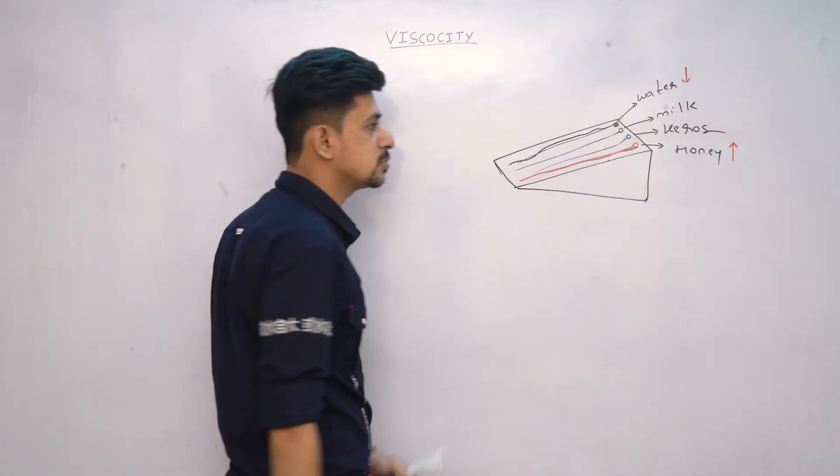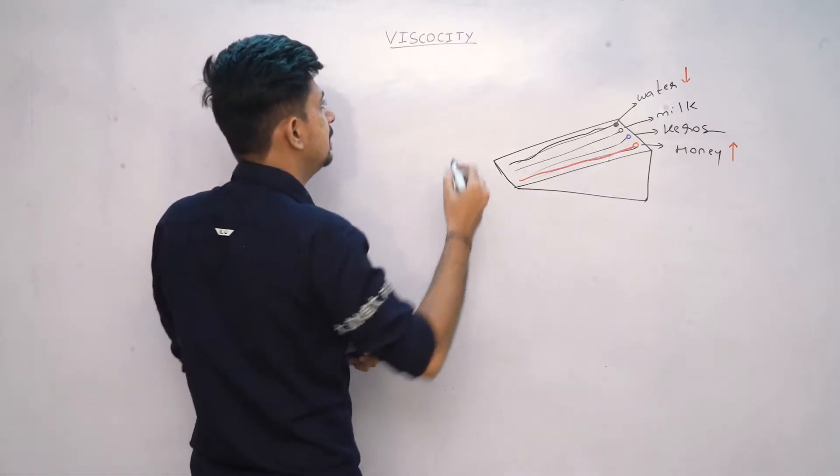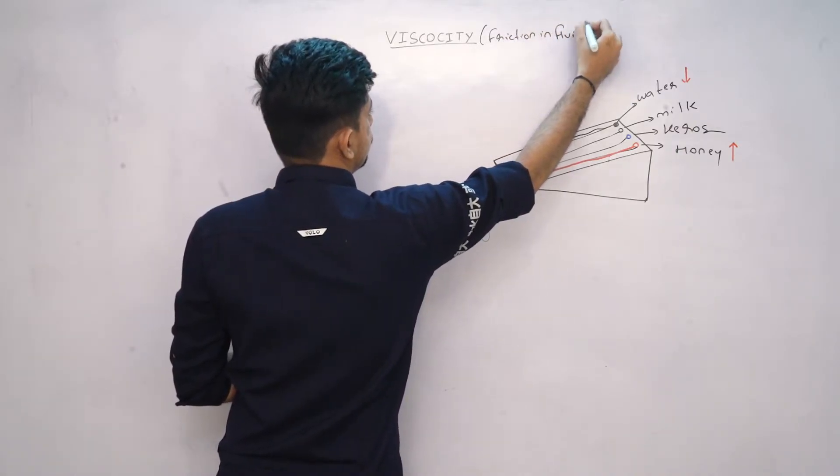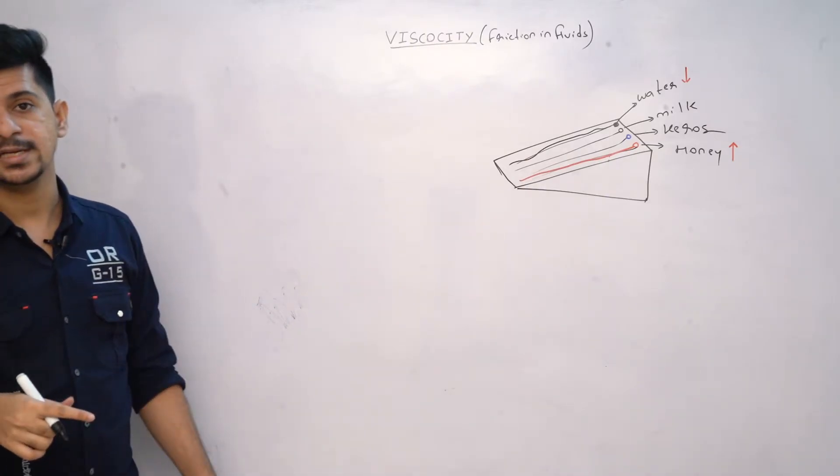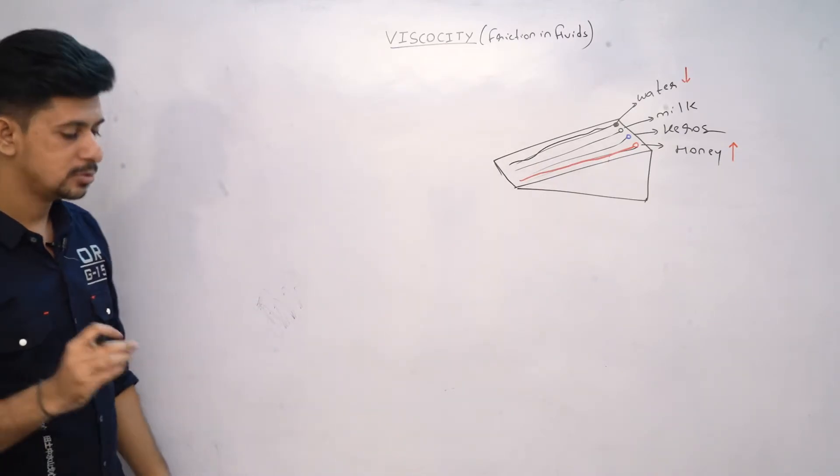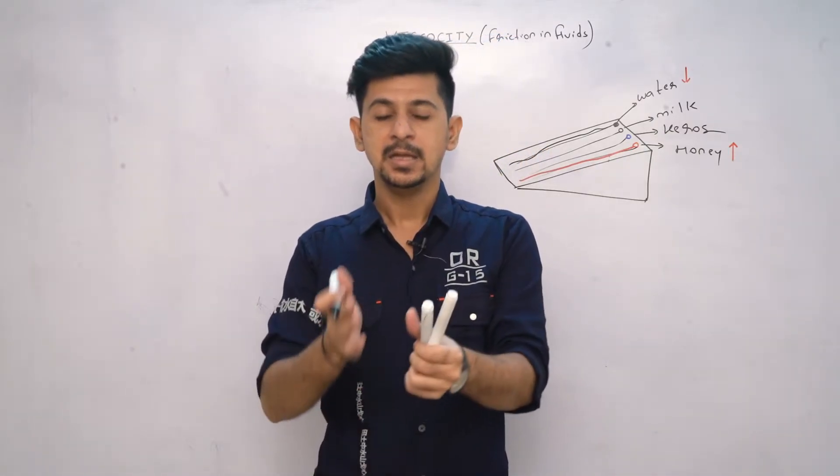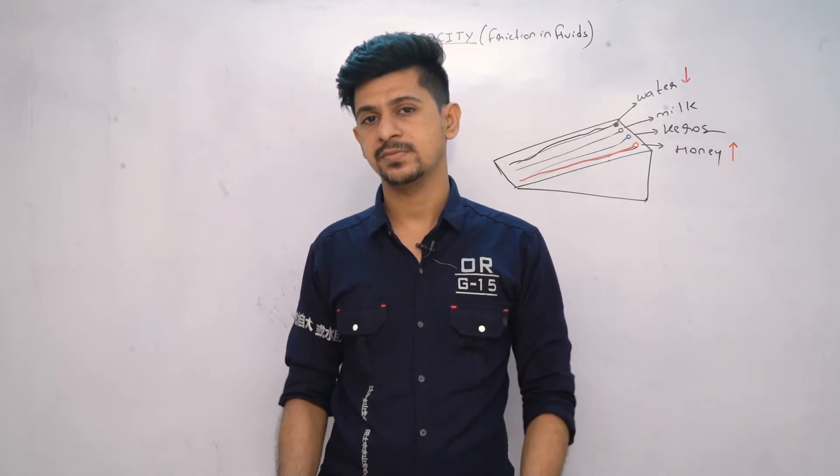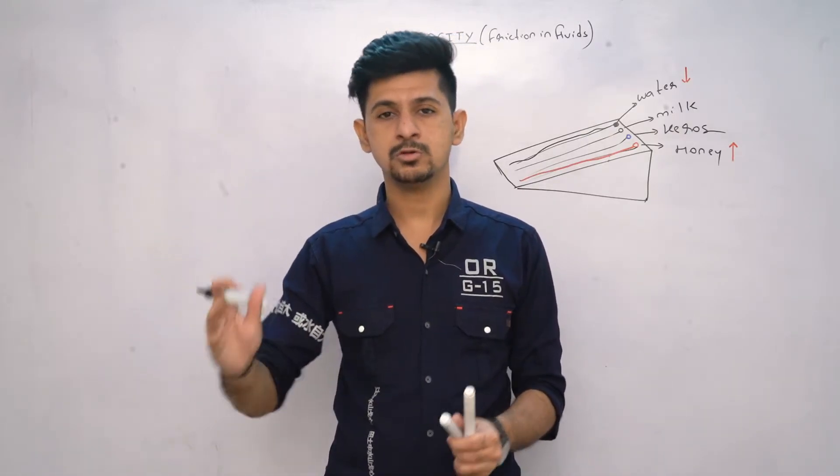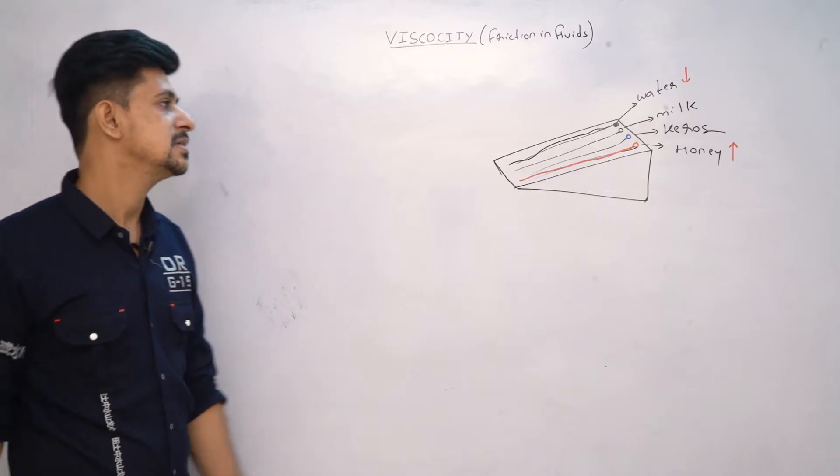What basically is viscosity? Viscosity is nothing but friction in fluids. We have friction in solids, right? This is friction in fluids. When you have liquids or gases, there will be some amount of friction between the fluid and the particular surface. This is what we call viscosity.